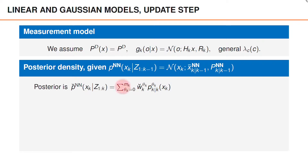That is, it contains m_k plus one terms, where the weight w_{theta_k} denotes the probability of association theta_k, and p_{theta_k}, with sub-indices k given k, is the posterior density given the measurements up to time k and the association theta_k.